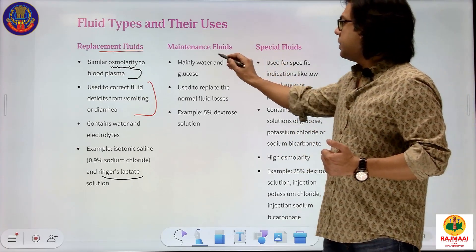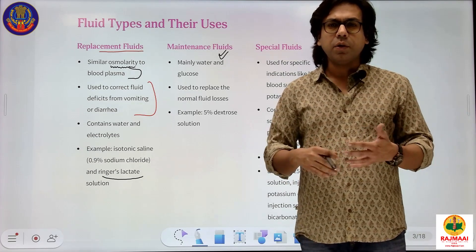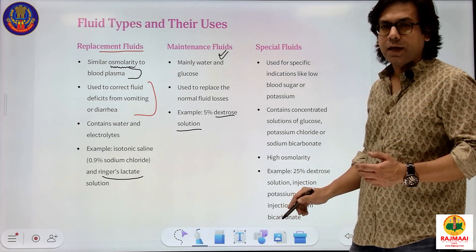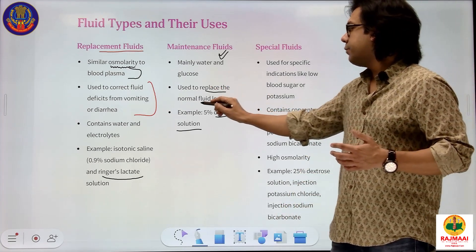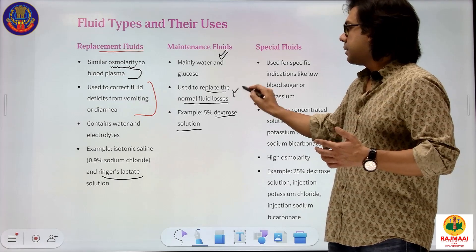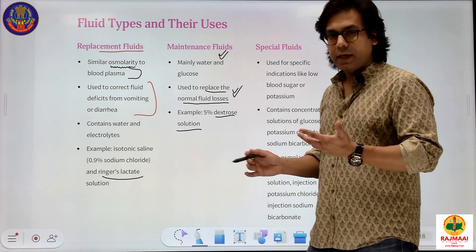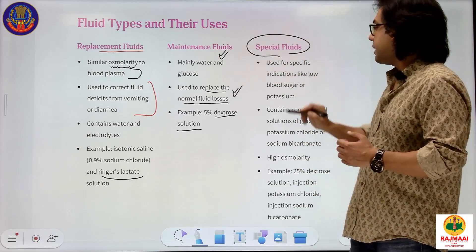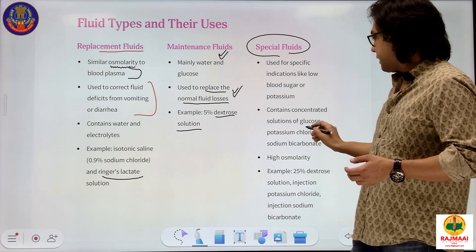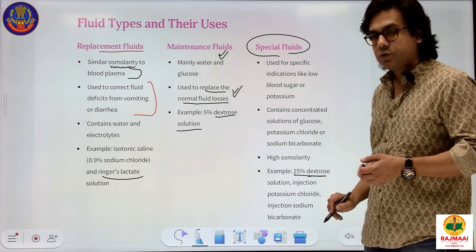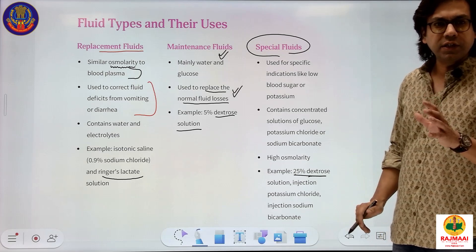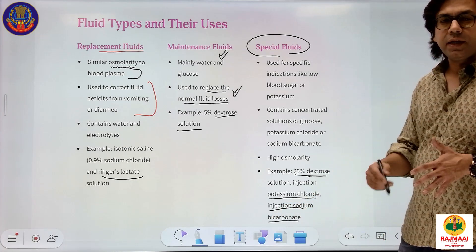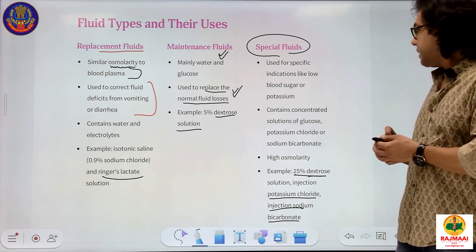Contrast this to maintenance fluids — water and glucose, mainly 5% dextrose (5% DNS) — used when body loss is a normal physiological loss. Special fluids include concentrated dextrose (25% solution), which is given in specific conditions, along with injection potassium chloride and injection sodium bicarbonate — all of these come under special fluids for special conditions.